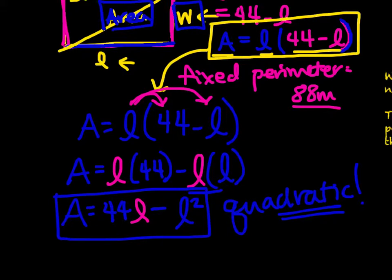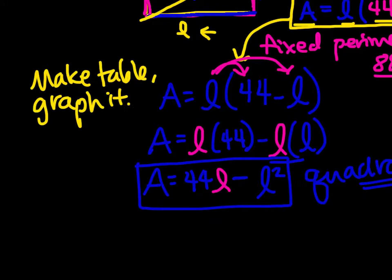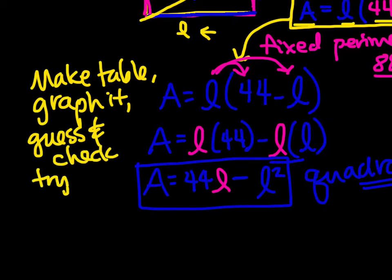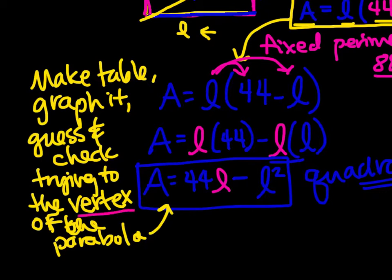Your last step for this will be to find the actual maximum area for that rectangular floor space. That will be something you can do very much on your own. I'll give you a couple of hints: you could make a table, you could graph it after you've made the table, or you could guess and check trying to find the vertex, specifically of the parabola that fits this equation. You want to find the vertex, that turning point where it's the highest point on that graph.